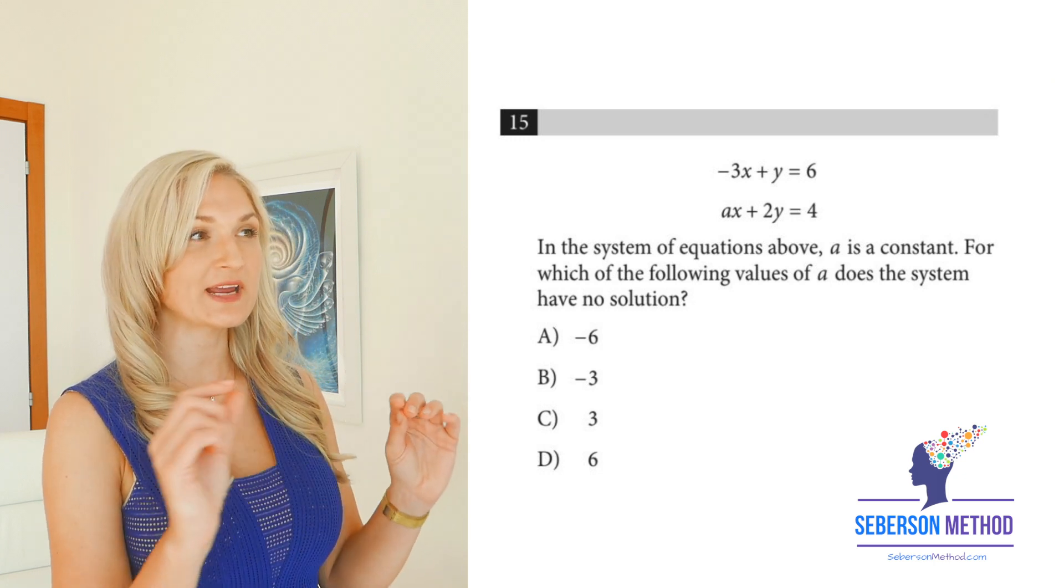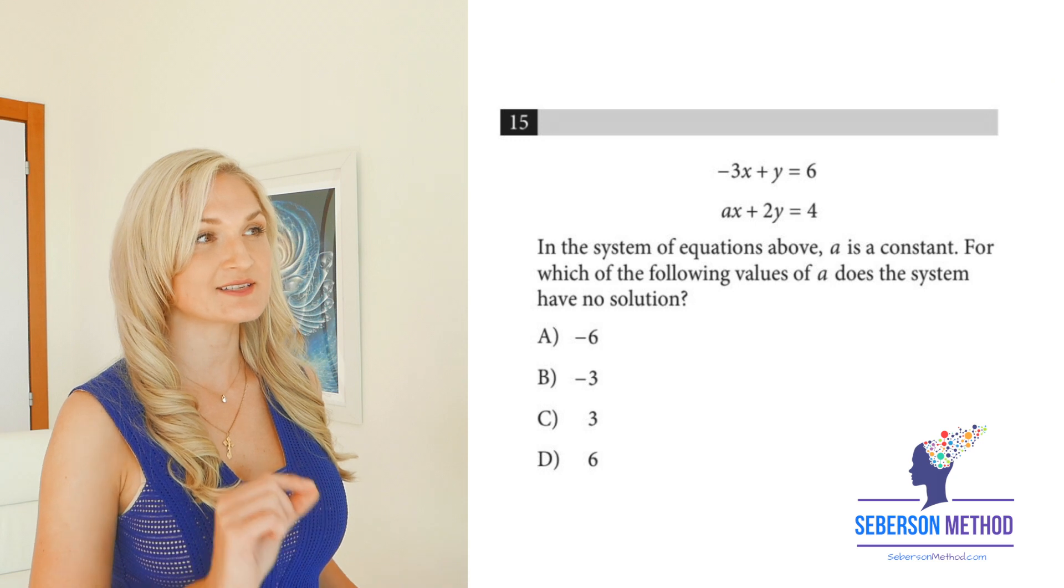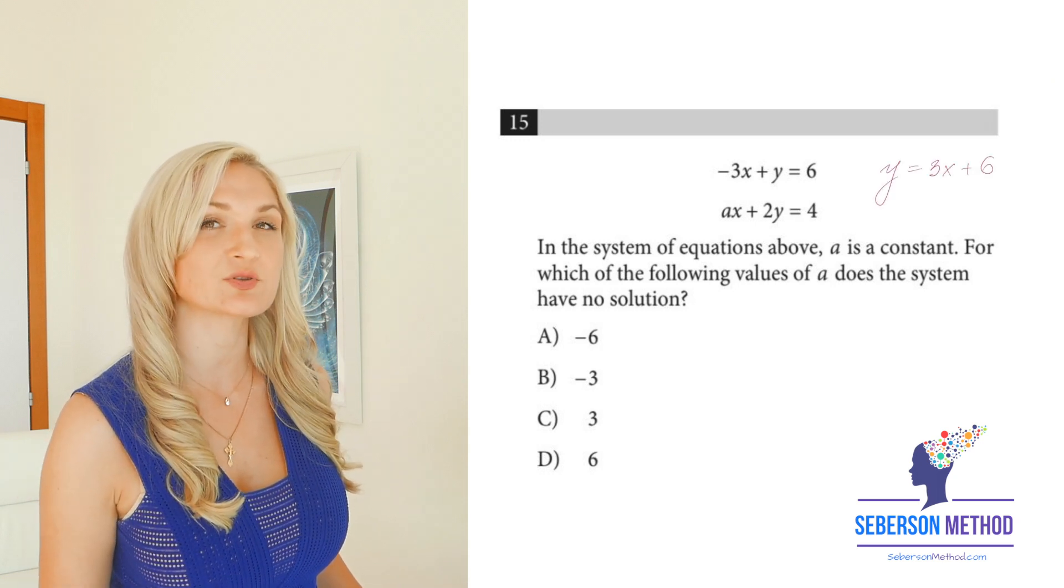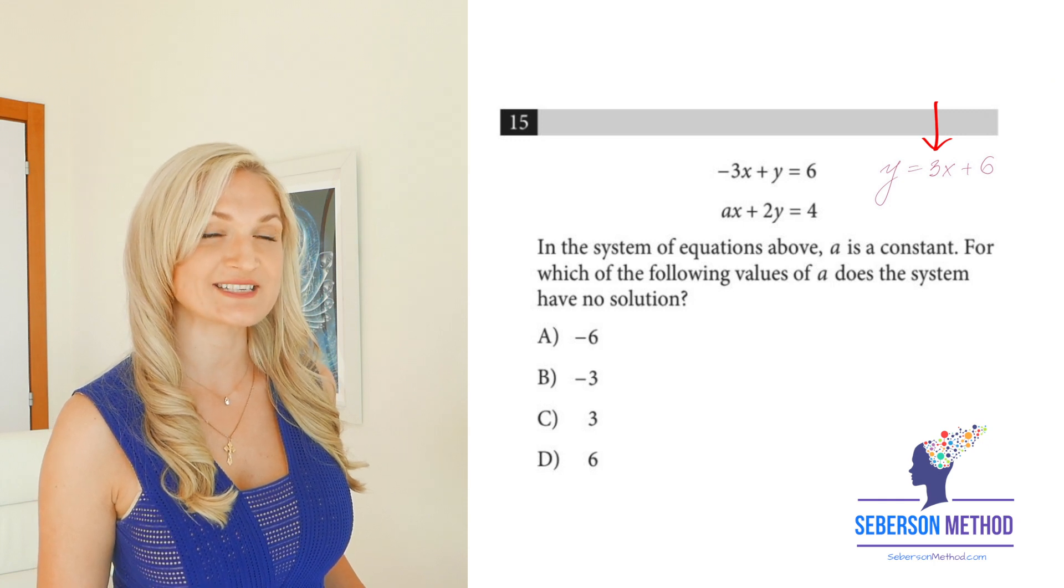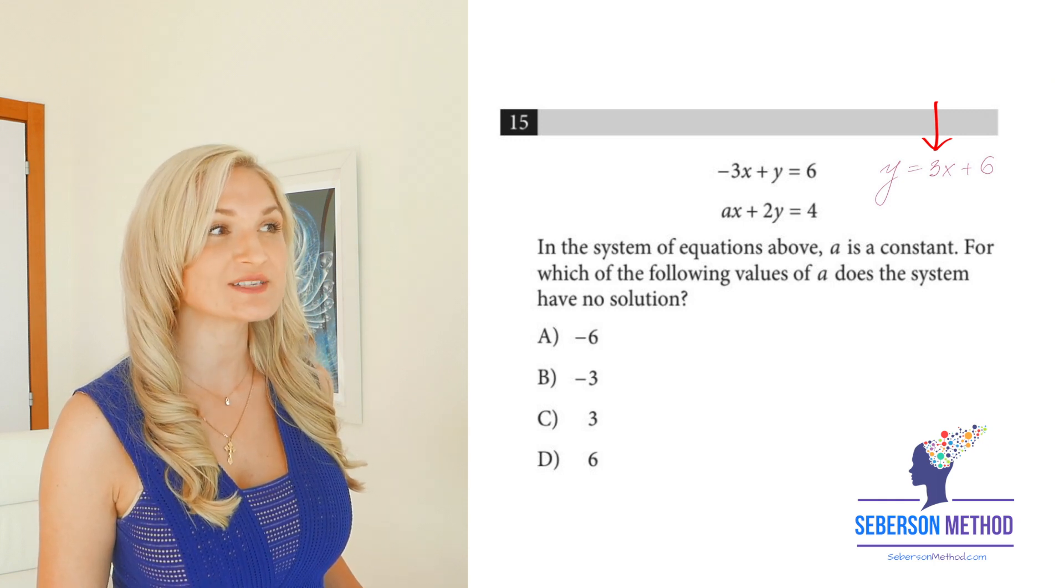When you bring your 3x to the other side, your slope is going to equal to three. What should be the slope of the second equation? It should also equal to three. But when you rearrange the second equation, it looks like the slope is going to be negative a over two.